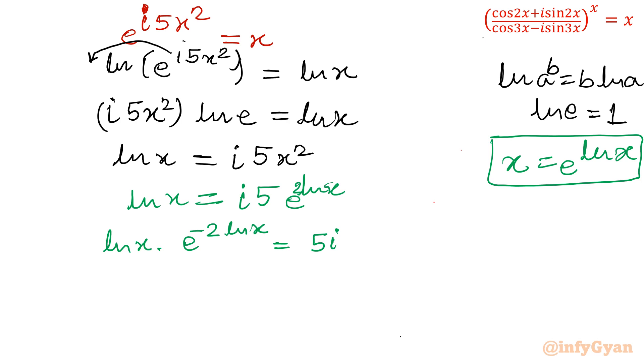Now if you observe, this is minus 2 ln x and here it is only ln x. As per our Lambert W form, this is our standard Lambert W function form. Whatever is written here, it should be in the product option. So minus 2 is required. I will multiply both sides by minus 2.